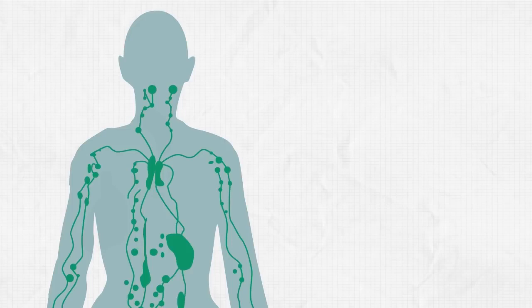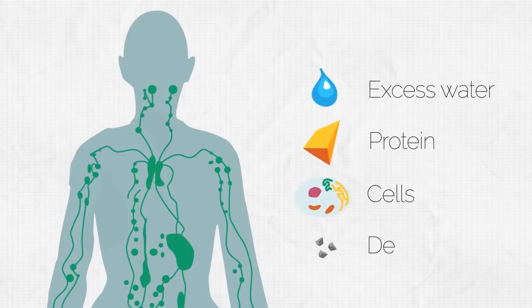It turns out your body has a similar system for dealing with excess water and contaminated substances. There are millions of tiny vessels in your body whose job it is to gather excess water, proteins, cells, and various bits of debris. This is called the lymphatic system.